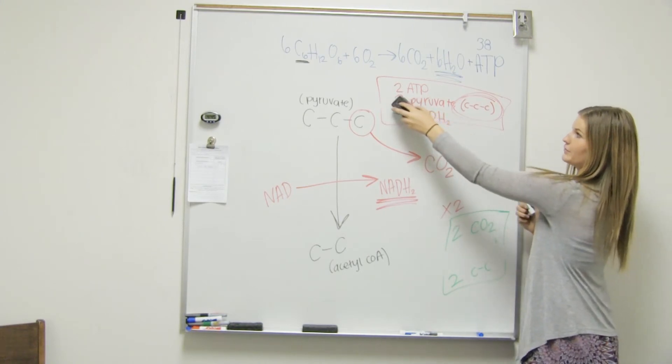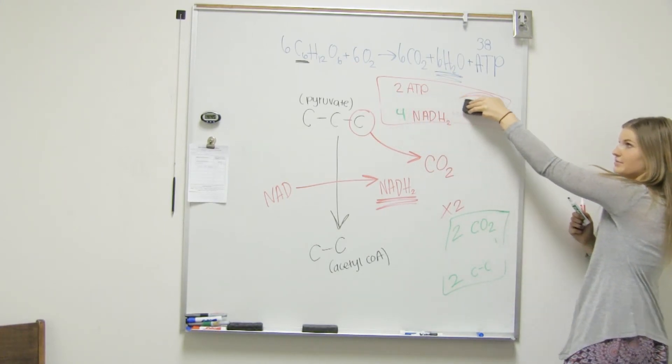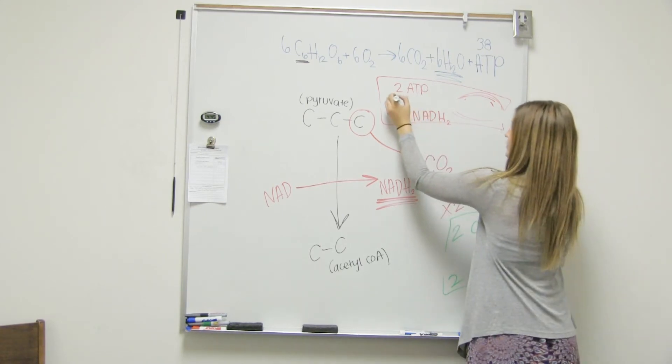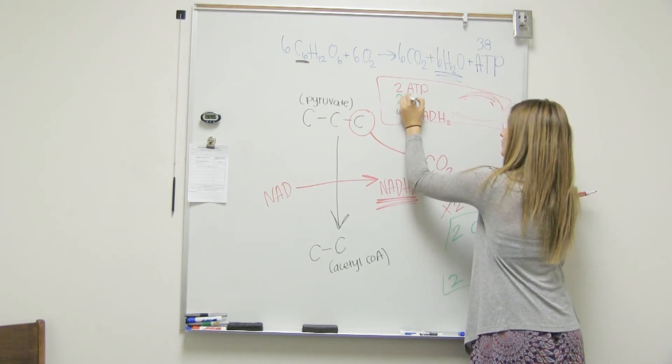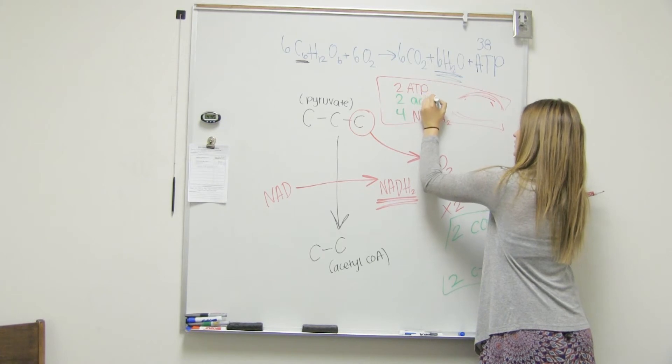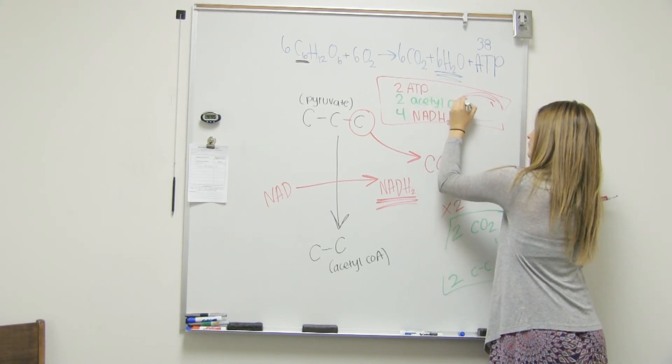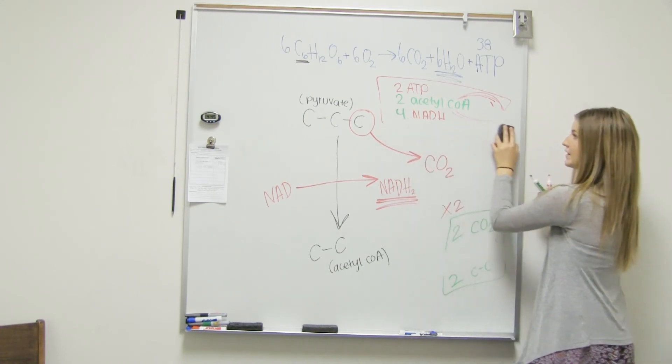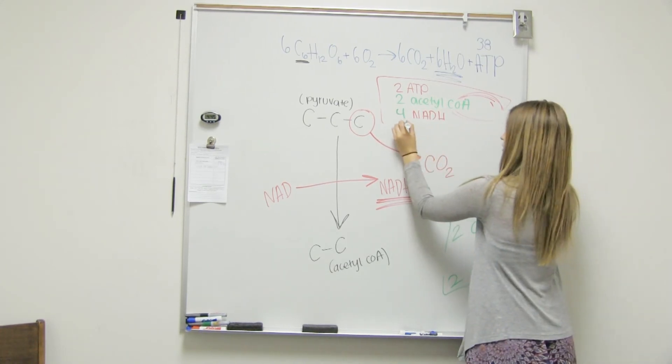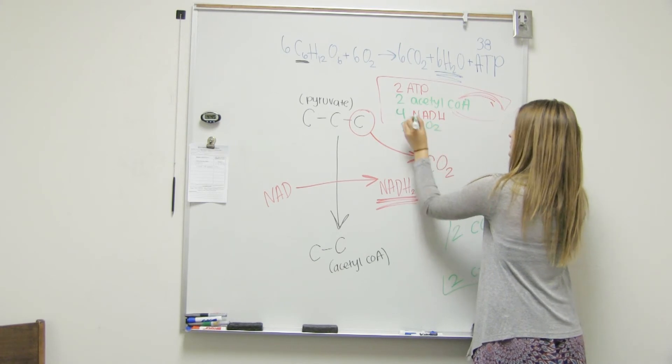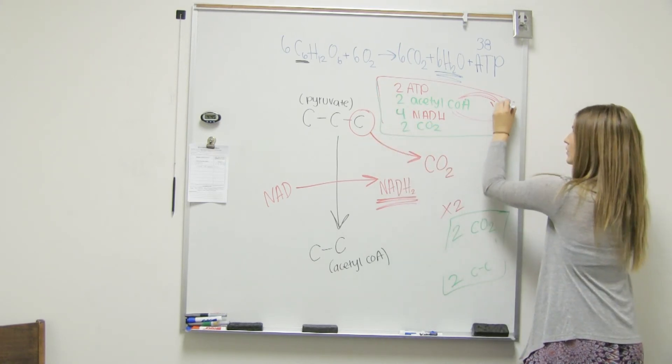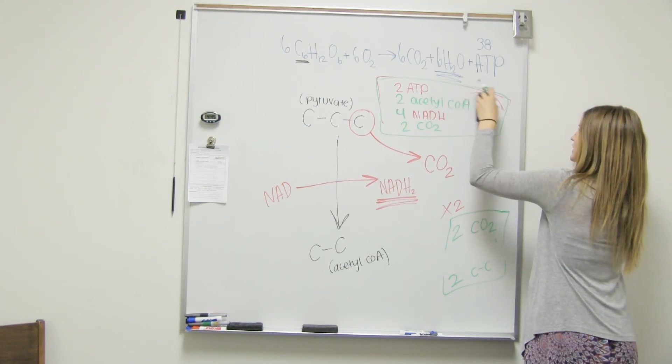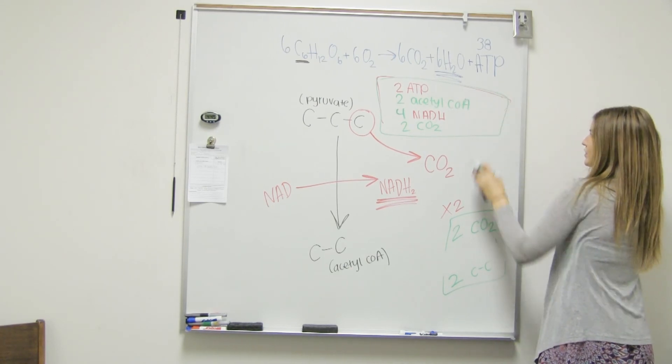We can take away our pyruvate. Right? Because now let's use that. Instead we're going to add our two acetyl-CoA. Or acetyl. What would it be? Acetyl-CoA. And then what else are we going to add? Two carbon dioxide. Two CO2s. So here's what we've made so far out of our glucose molecule.